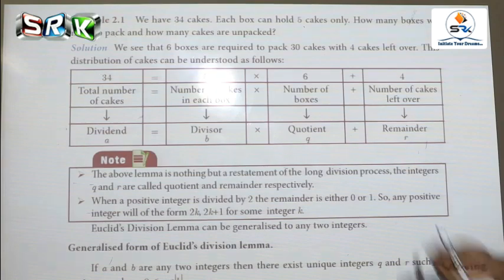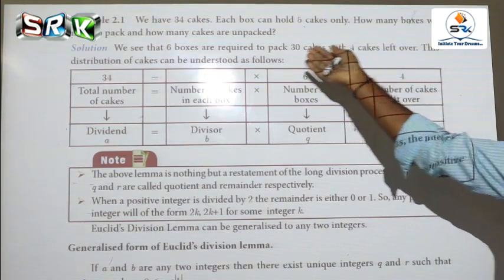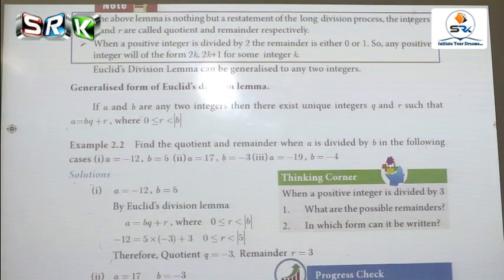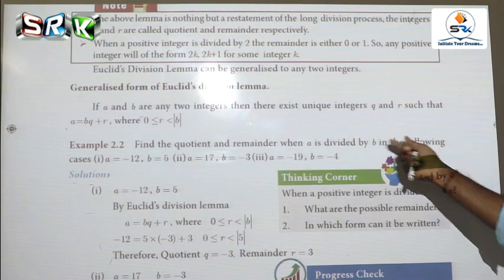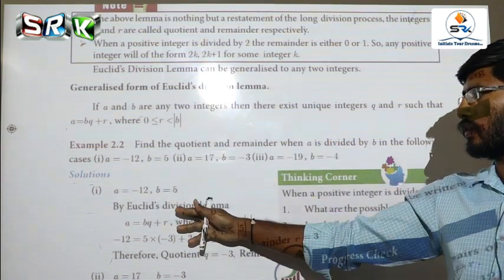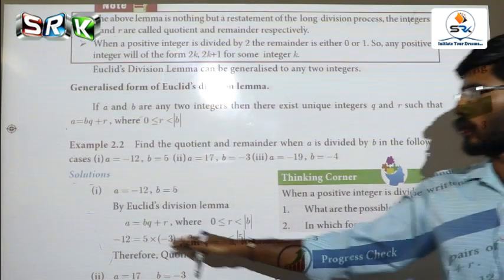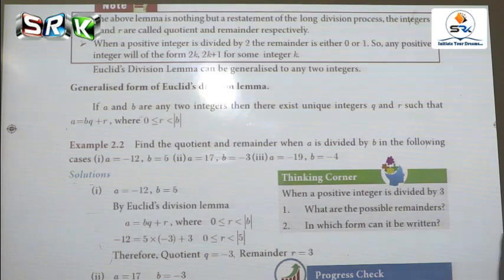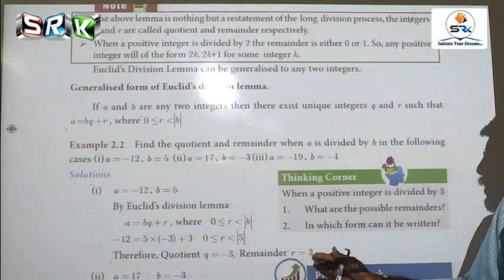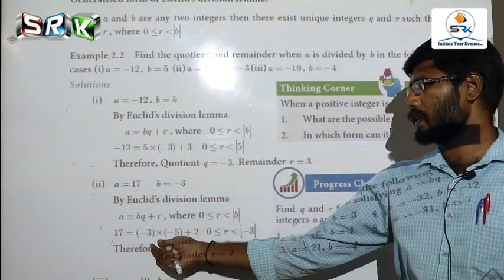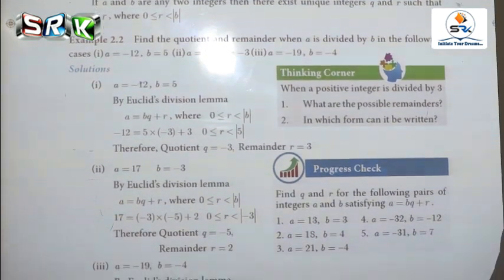Now see another problem. It is a generalized form of Euclid division lemma. Find the quotient and remainder when A is divided by B. Case one: A equals minus 12, B equals 5. By using division lemma, apply A equals BQ plus R. Substituting the values, we get quotient Q equals minus 3 and remainder R equals 3. For the second part, A equals 17 and B equals minus 3. Applying the condition, Q equals minus 5 and remainder R equals 2.